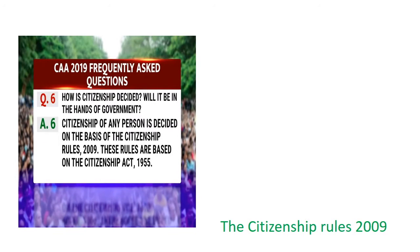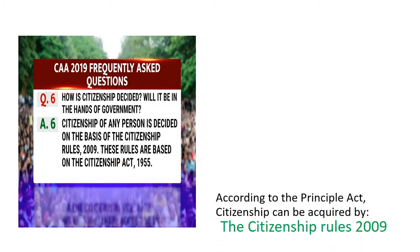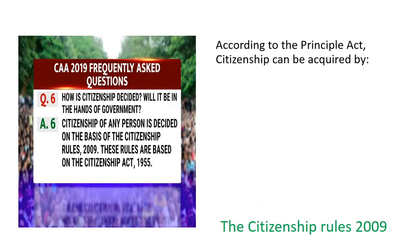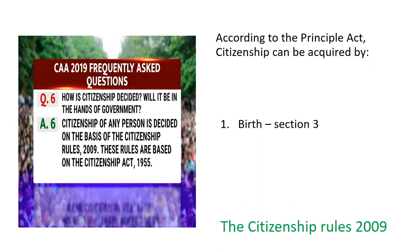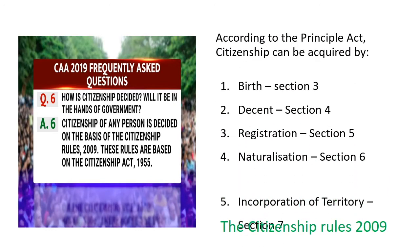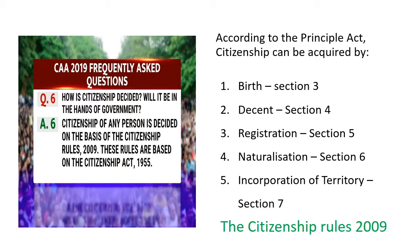According to the Principle Act, the citizenship of any person is decided on the basis of the Citizenship Rules of 2009. The citizenship of India can be acquired by Birth, Descent, Registration, Naturalization, and Incorporation of Territory, as provided in sections 3, 4, 5, 6 and 7 of the Principle Act.